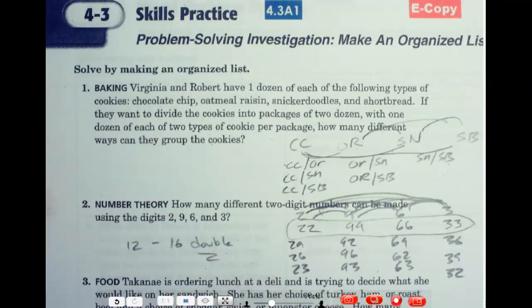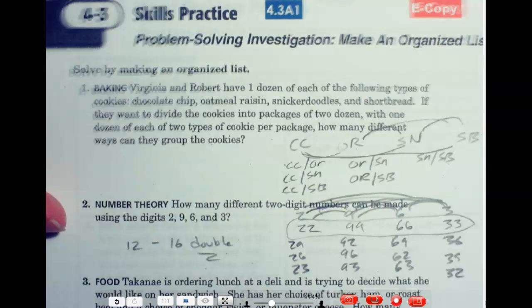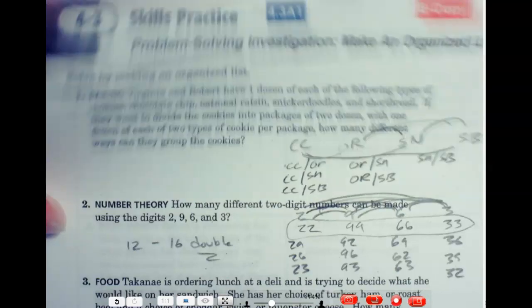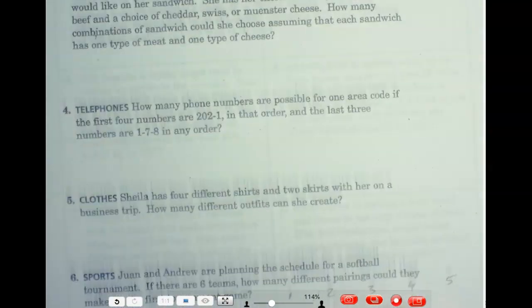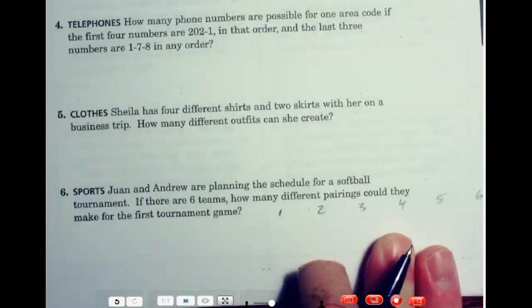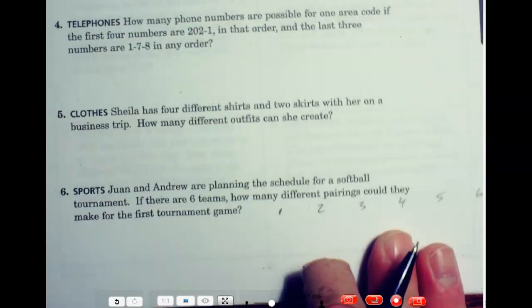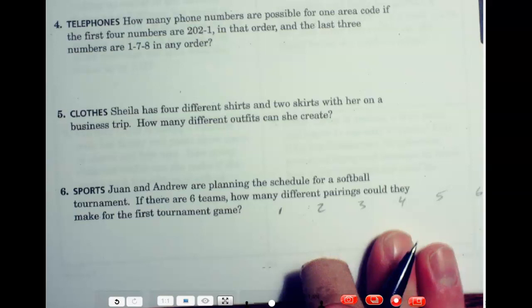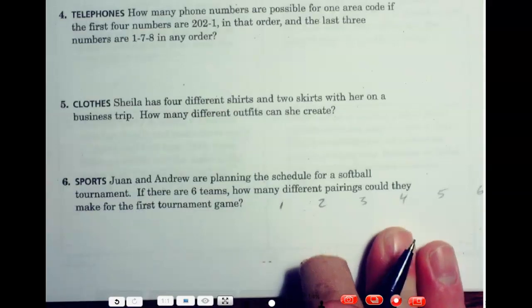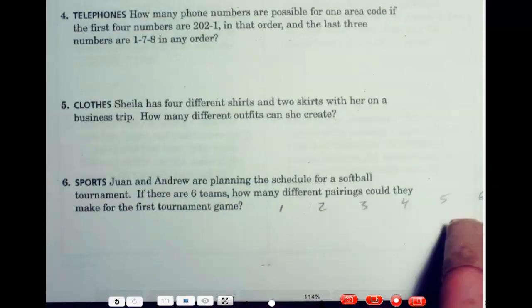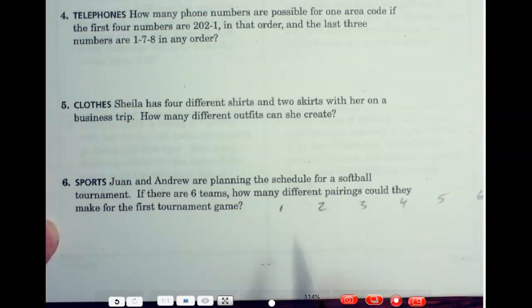All right. Let's see. I'm going to do one more that is kind of like this first one. I call it the softball tournament. And that's what they are actually doing. Juan and Andrew are planning the softball tournament for the fall. There are six teams. So, how many different team pairings could they make for the first tournament game?